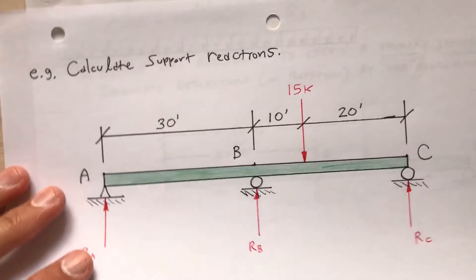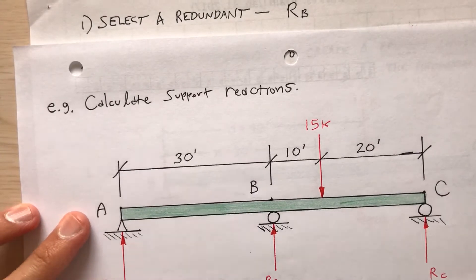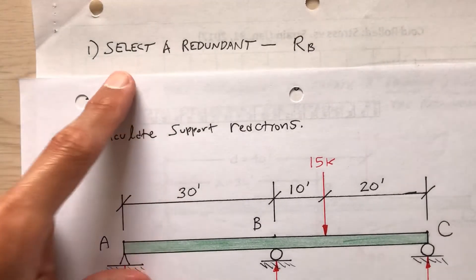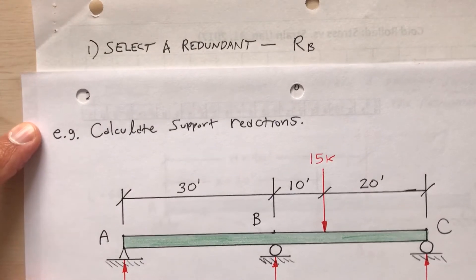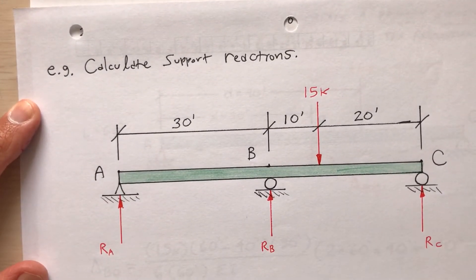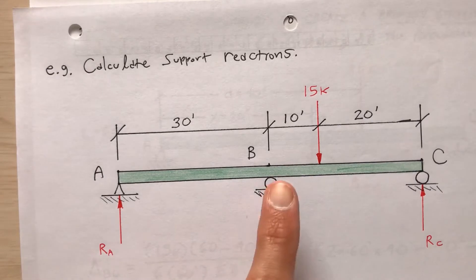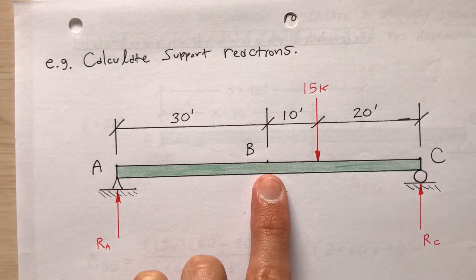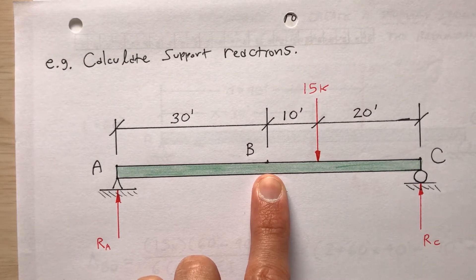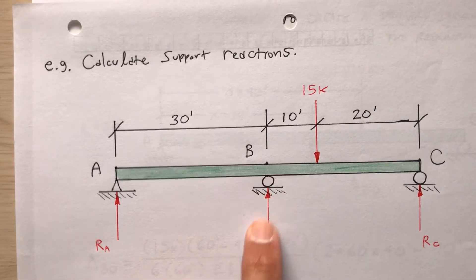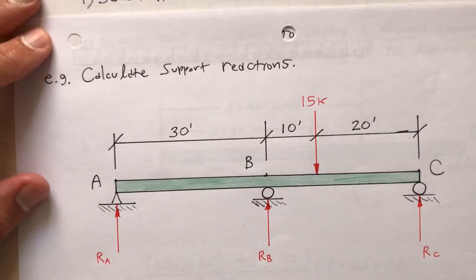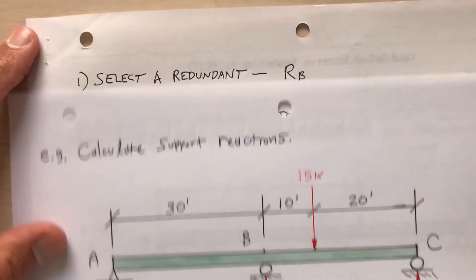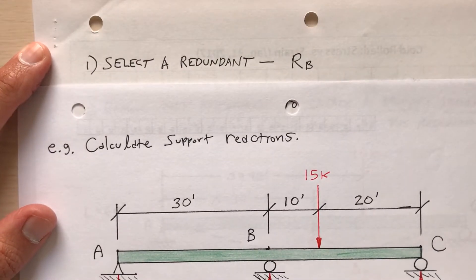So using the flexibility method, step one is to select a redundant. I've got three reactions here. If the material is strong enough, I could take out R sub B, and the reactions at A and C would be sufficient — it would be simply supported. So R sub B, I'm going to consider as my redundant. I select redundant reaction R sub B.